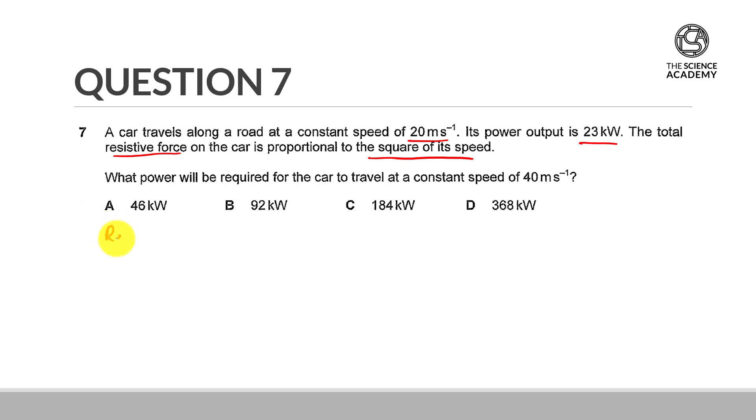So this means that the resistive force, let's call it F, is going to be equal to kv squared, where k is the constant of proportionality.